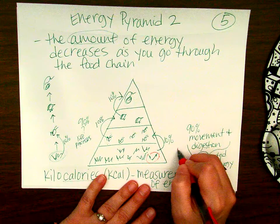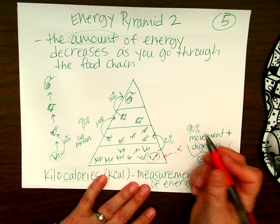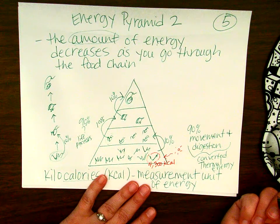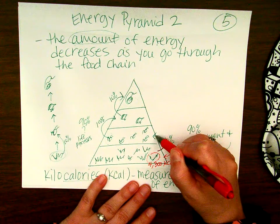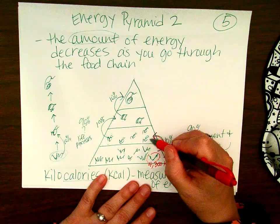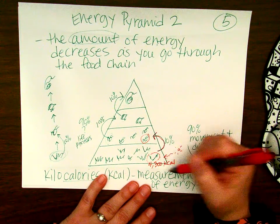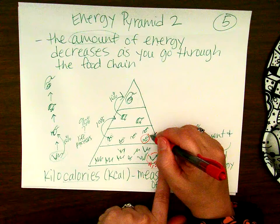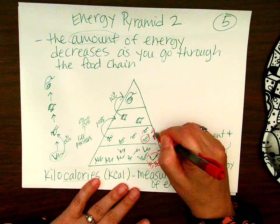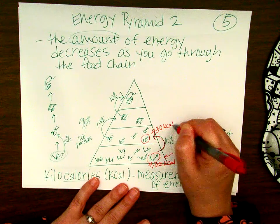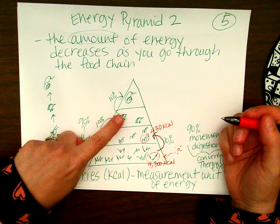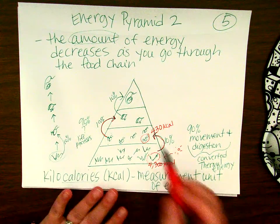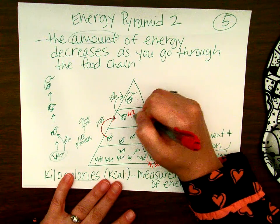Let's do a little math. Let's say this patch of grass converted the sun's energy into 4,300 kilocalories. Only 10% gets transferred to the next organism, and a quick math hack: to find 10%, just remove the last digit. So the grasshopper only gets 430 kilocalories. Then this bird eats the grasshopper and only gets 10% of that, so the bird gets 43 kilocalories.